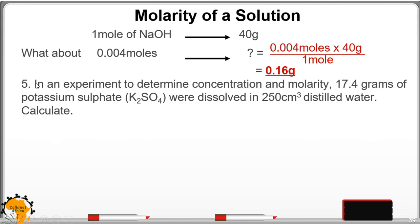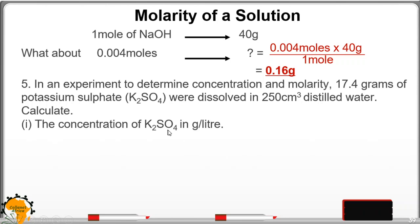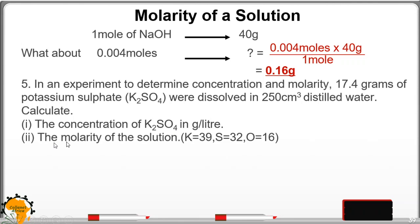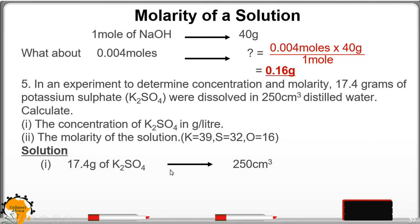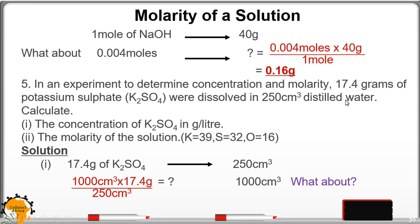Example 5: In an experiment to determine concentration and Molarity, 17.4 grams of potassium sulfate (formula given) were dissolved in 250 cm³ of distilled water. Calculate the concentration of potassium sulfate in grams per liter. Since 17.4 g is dissolved in 250 cm³, we ask: what about in 1,000 cm³ (1 liter)? Cross-multiplying gives 69.6 grams per liter.